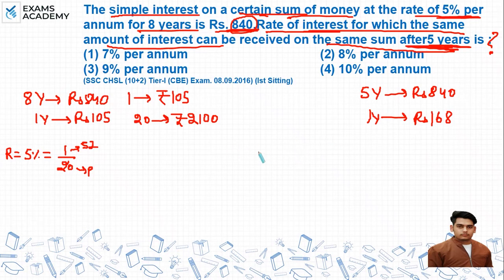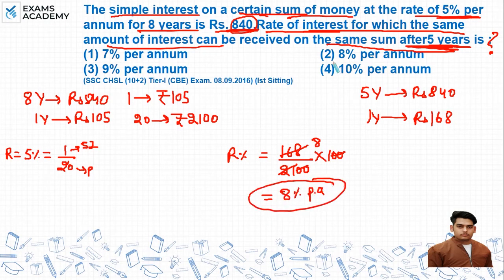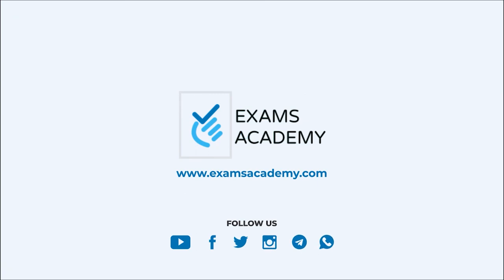अब हमें find करना है rate of interest। 1 year का interest आ रहा है Rs. 168, और principal है हमारे पास Rs. 2100। इसको 100 से multiply करें तो zeros cancel होकर यह जाएगा 8 पे। तो हमारे पास rate of interest आ रहा है 8% per annum। तो correct option है option number 2, 8% per annum।